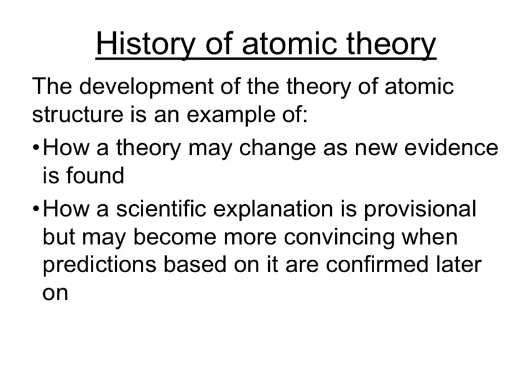So the development of the theory of atomic structure is an example of how the theory changes as more and more information is found, as more evidence is found by scientists. And scientists share their ideas by writing scientific papers. And then other scientists come along and try to test whether those theories are correct or wrong. And if they find out more information, then they publish more papers. And if other people agree with them, then the theory is changed as a result. Your specification says that the development of the theory of atomic structure is an example of how a theory may change as new evidence is found, and also how a scientific explanation is provisional but may become more convincing when predictions based on it are confirmed later on.